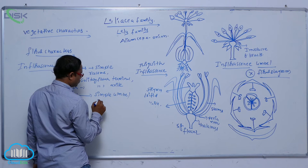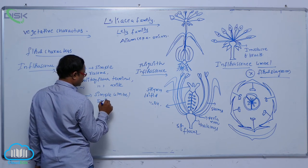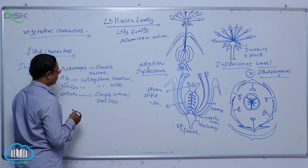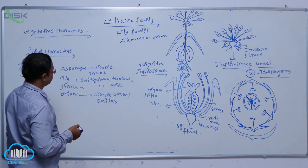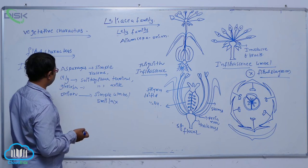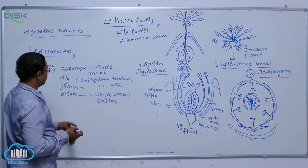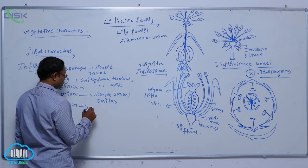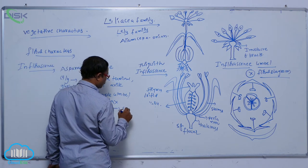Smilax also shows an umbel inflorescence. So the types are: simple raceme, solitary flower in lily (terminal), solitary flower in gloriosa (axillary), simple umbel in onion, umbel in smilax, and in yucca, a panicle inflorescence is shown. Panicle means compound raceme.